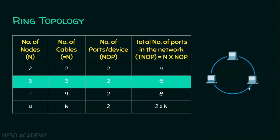This is an example scenario that involves three nodes. If three nodes are involved, then obviously three cables are required. Three nodes need three cables, and each node must have two ports — so the number of ports per device is equal to two. Therefore, two into three is equal to six — a total of six ports are there in the network.